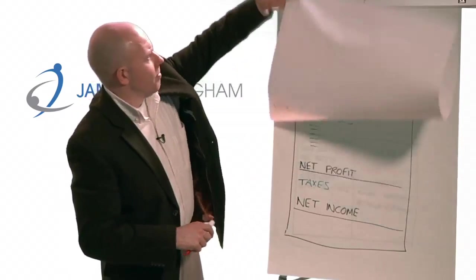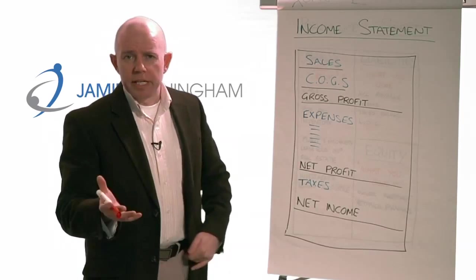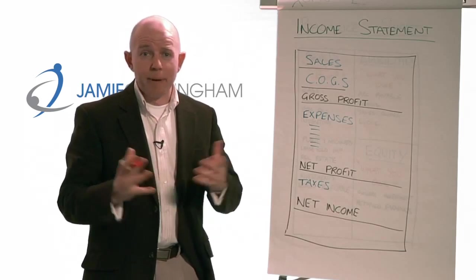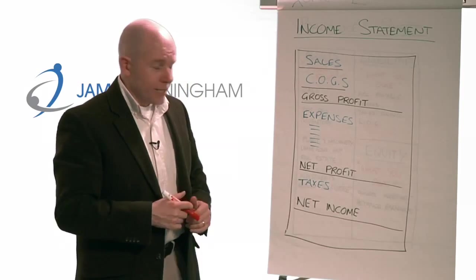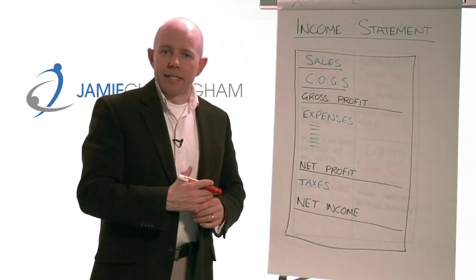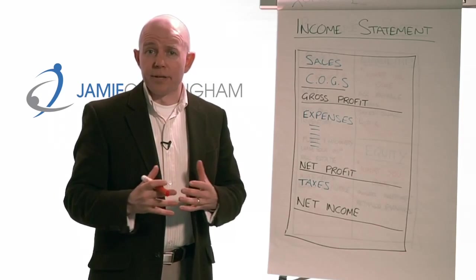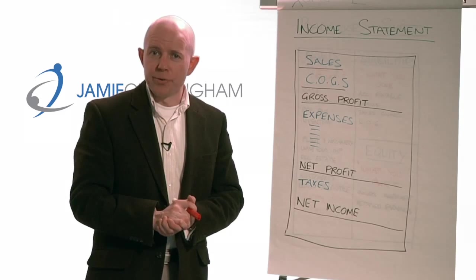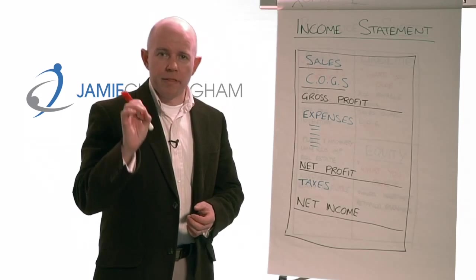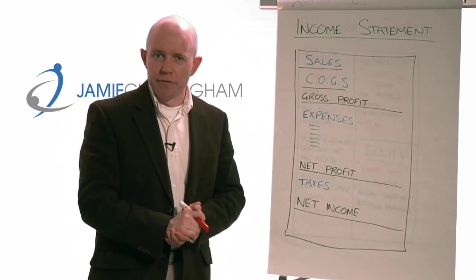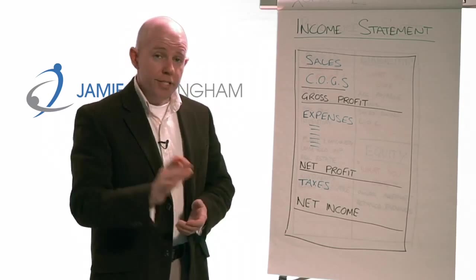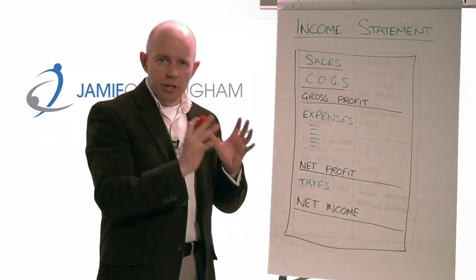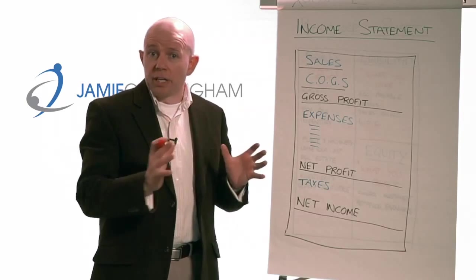The first one — the income statement — is generally the one most people look at, to see am I making money or not. As I'm about to explain, this report is in fact a theory. It's based on a bunch of promises of what's going to happen in the future. Issuing an invoice to someone is on the promise that they intend to pay you — not that they've actually paid. That's why the income statement is just one of the tools; it's not the be-all and end-all, though it's certainly very important.